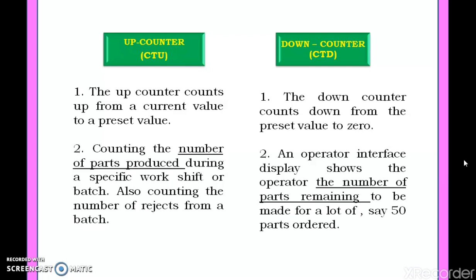The basic difference between up and down counter use is as follows. An up counter is used when counting parts produced during a specific work shift — components start at 0 and increase toward the preset value. A down counter is useful when an operator wants to know how many jobs remain to be produced. The counter starts at the preset value and decreases as new components are produced, telling the operator remaining parts at any moment.